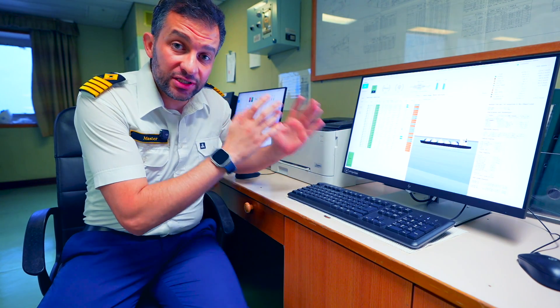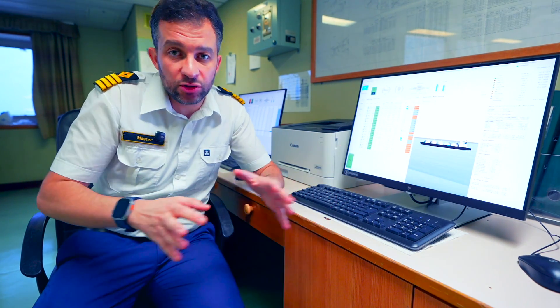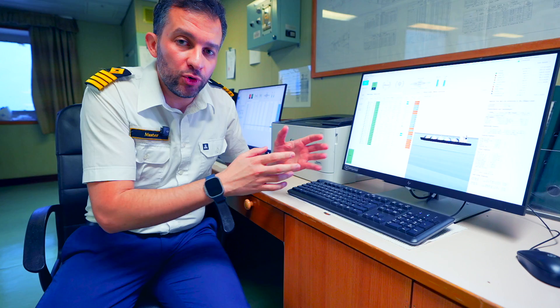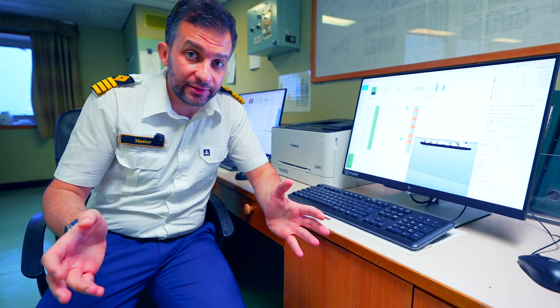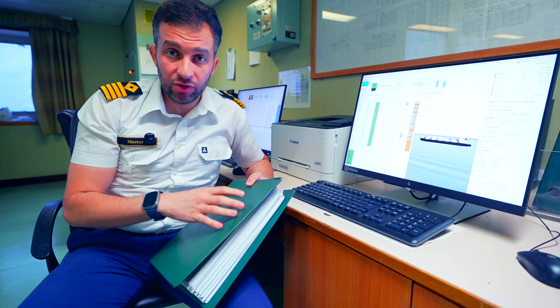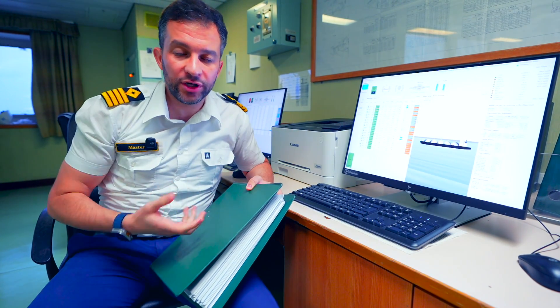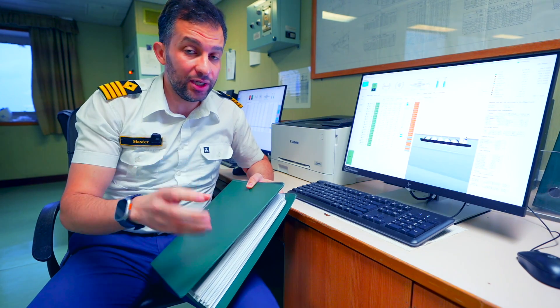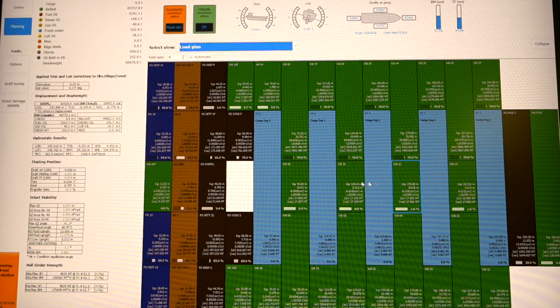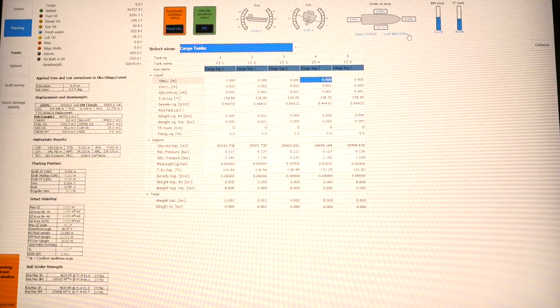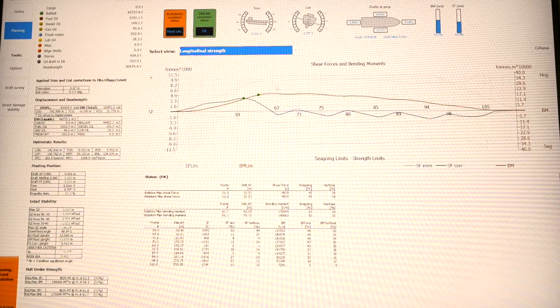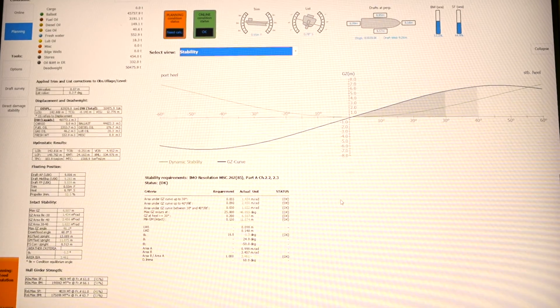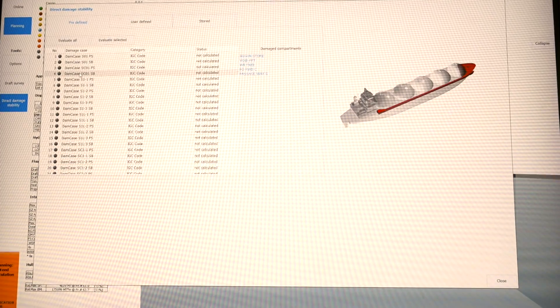All the planning happens in this computer called the load indicator. So before any operation - loading, discharging, ballasting, deballasting or even bunkering - we do simulation in this computer to make sure that the result of this operation will not affect our stability and will not affect our hull integrity. This software has the loading manual or the stability booklet inside. To avoid that the chief mate or the operator doing the calculation manually which takes time, this software has all ships tanks levels fed to it - cargo tanks, ballast tanks, fuel oil tanks and other tanks. Based on these levels it gives you the forces and bending moments exerted on the ship's hull and stability criteria. You can even simulate damages to the hull and see what's the stability result.